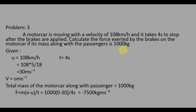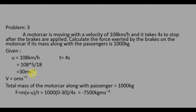First, write the given values: U = 108 km/h, time T = 4 seconds. Here we convert km/h into m/s because velocity is always measured in m/s. To convert km/h to m/s, multiply by 5/18. So, 108 × 5/18 = 30 m/s. Therefore U = 30 m/s. After the brakes are applied, there is no movement, so the final velocity V = 0 m/s.